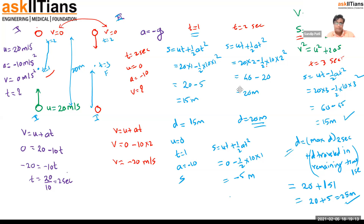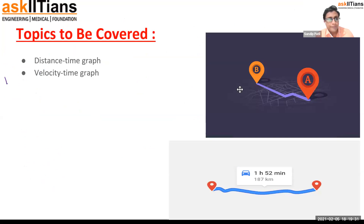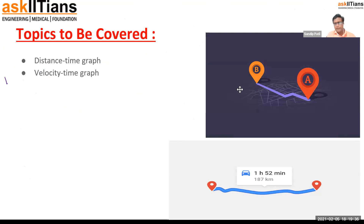This question clears most concepts about kinematic equations and vertically upward motion with negative acceleration due to gravity. Now let's move to what we are doing today: drawing distance-time graphs and velocity-time graphs.